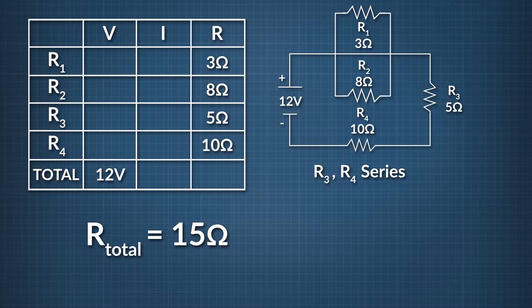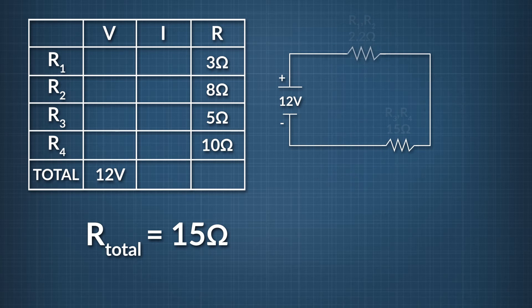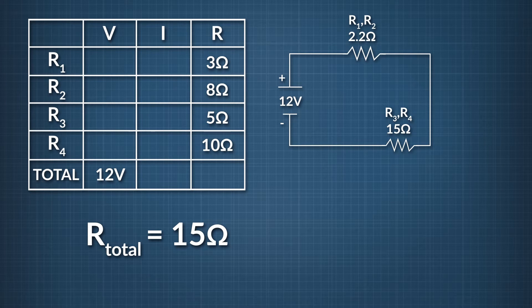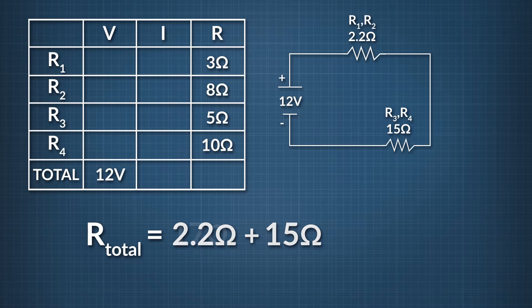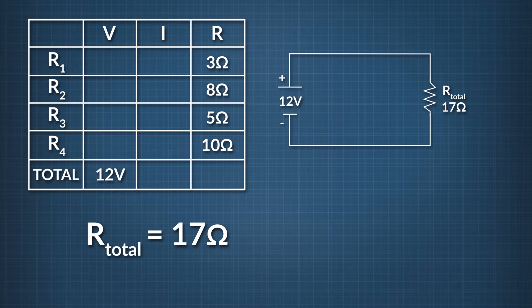At this point, it's helpful to redraw our circuit to reflect the progress we've made. We've solved for the equivalent resistance of both the parallel and series resistors, so we can redraw the complex circuit showing these equivalent values in place of the original four resistors. Since our goal is to find the total resistance, we add these equivalent resistances together. Since they are in series, the overall resistance equals 2.2 ohms plus 15 ohms, which rounds to 17 ohms. We fill in the box for total circuit resistance: 17 ohms.